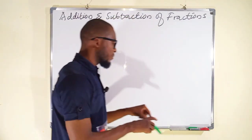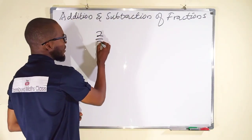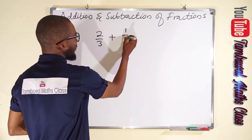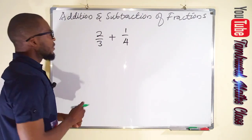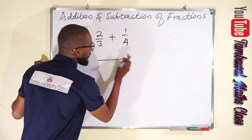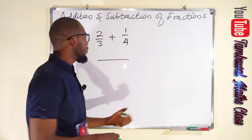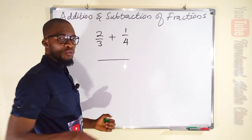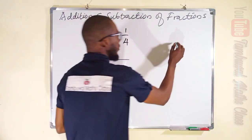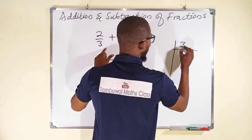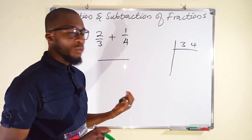Let us add some fractions together. First we want to add 2 over 3 and 1 over 4 together. To find the LCM of 3 and 4, you have to find that smallest number which 3 and 4 can go into without remainder. If you don't know how to find it, you perform a successive division of these two numbers, 3 and 4, by prime numbers, starting with the smallest which is 2.